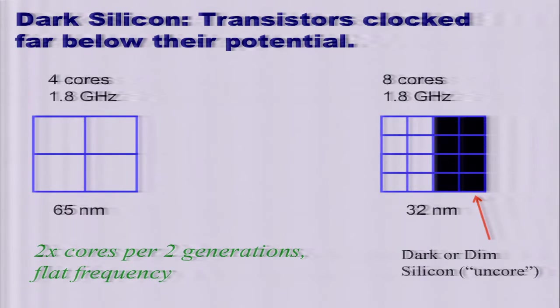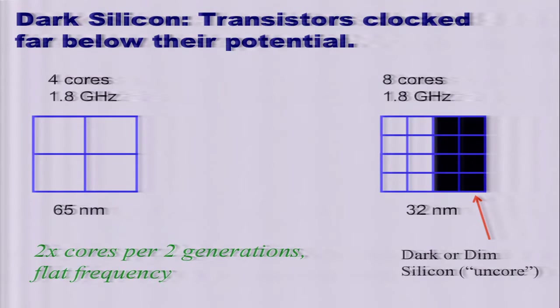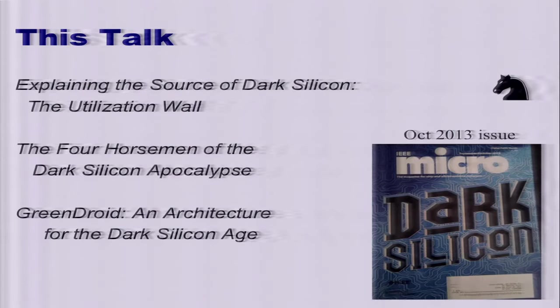Instead what we have is dark silicon — we have a lot of transistors that we cannot utilize at their full frequency. Part of the challenge for architects is first realizing that this is the problem, and then realizing that beyond initial efforts to improve basic energy efficiency, we need to think about the problem in a more fundamental way — to fundamentally change the way we do architecture to address dark silicon, which is all the transistors we cannot clock at full frequency because of power budget.